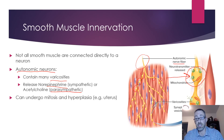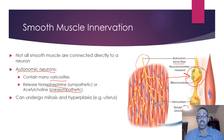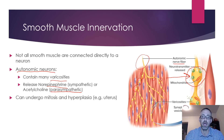Unlike skeletal muscle, smooth muscle can undergo mitosis and therefore hyperplasia — an increase in cell number. A good example is during pregnancy, when the uterus enlarges as the fetus grows and smooth muscle cells divide. Smooth muscle can also undergo hypertrophy, where individual cells become larger.